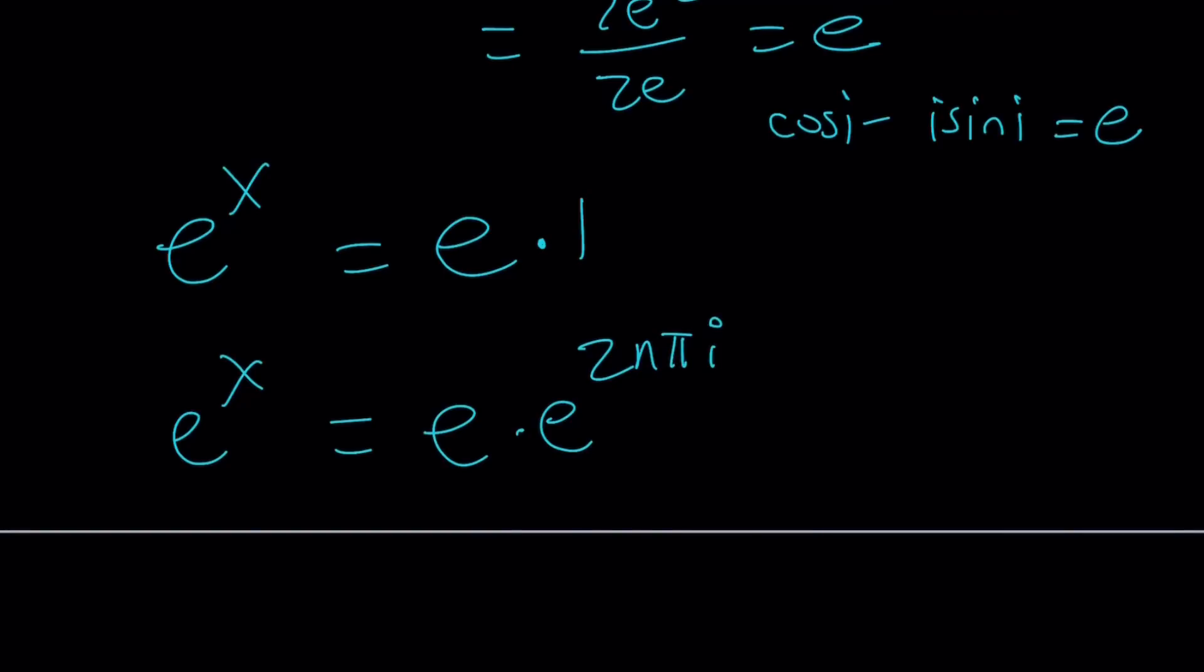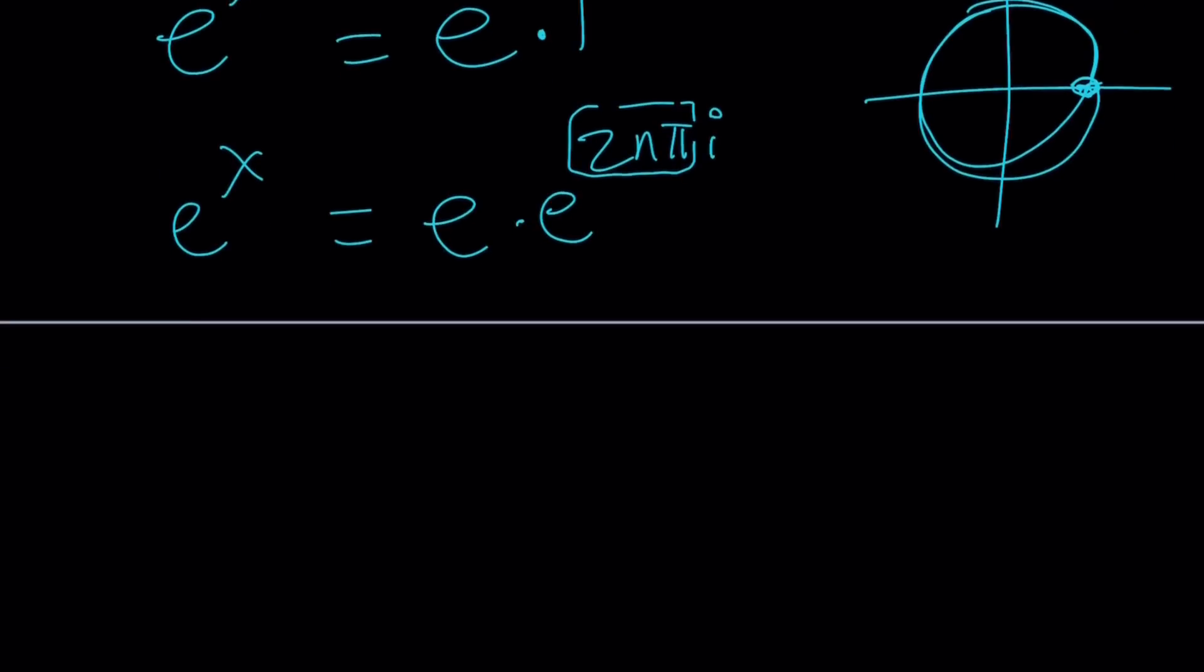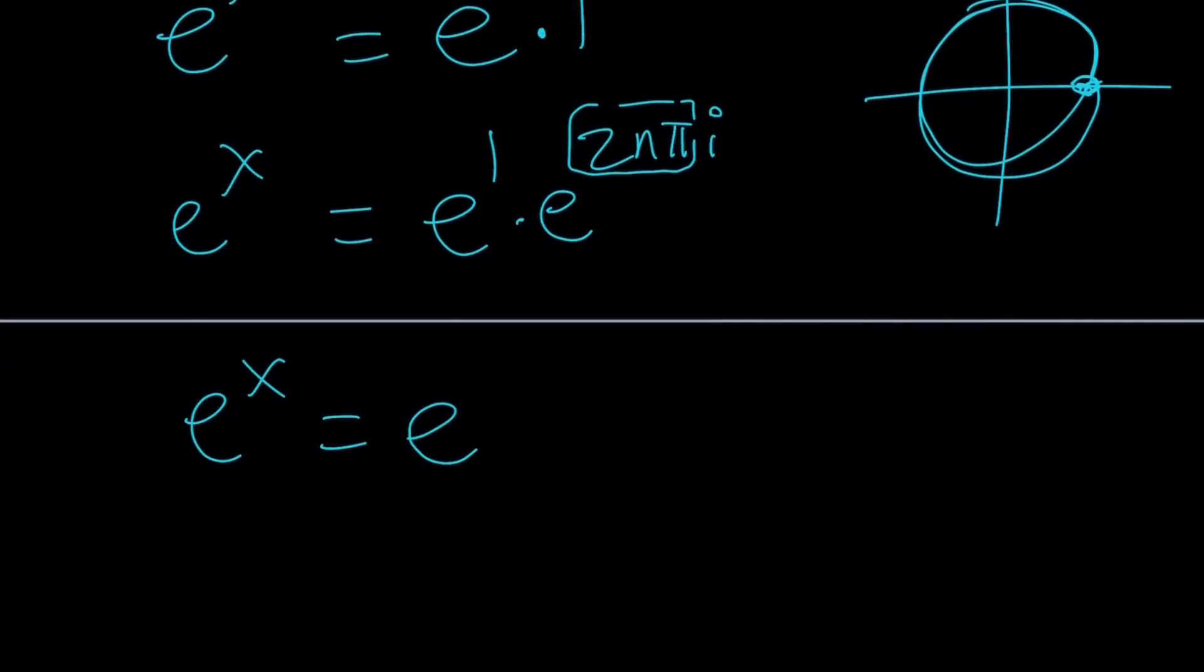Remember, i times theta, and this is our angle. Theta multiples of 2 pi is going to give us 1 all the time, because on the unit circle, you're at 0, make another rotation, so on and so forth. Makes sense? And from here, obviously, this is first power e to the x becomes e to the power 1 plus 2n pi i, and from here, x becomes 1 plus 2n pi i.